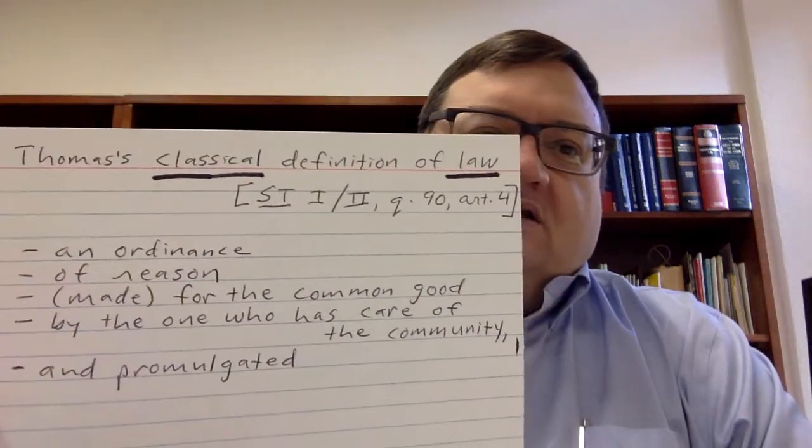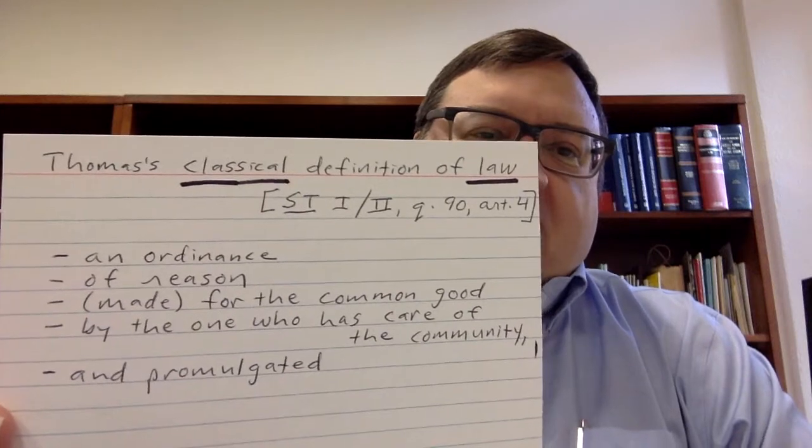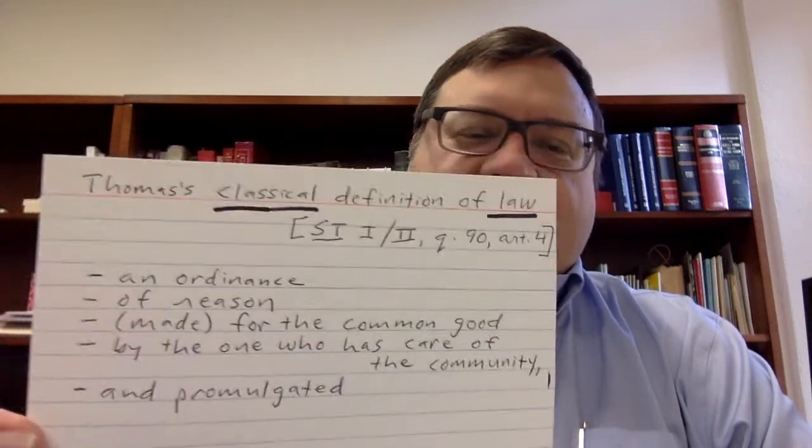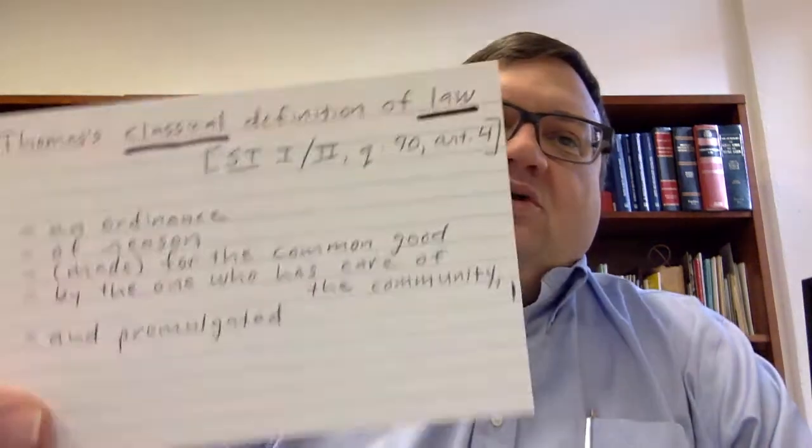Now, having covered the lawgiver, the common good, and promulgation, we reach Thomas's classical definition of law — still in Question 90 of the first part of the second part of the Summa, now in Article 4. After building up to it, Thomas gives us the great crescendo: 'A law is nothing other than an ordinance of reason.' That is, it's a reasonable ordinance — an order to do or not do something, but grounded in reason with some legitimate justification.